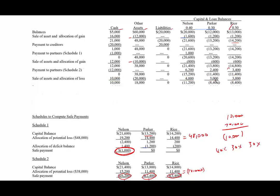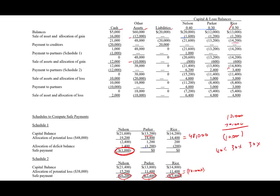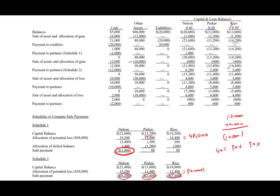With the $10,000 in cash, we distribute it to the partners at 40%, 30%, and 30%, then we have zero cash again. We have $18,000 left in assets which are sold for $2,000, leaving a $16,000 loss to distribute. After distributing those losses, the remaining balances are $800, $600, and $600 — totaling $2,000 cash — which is distributed accordingly, and the entire partnership is liquidated.